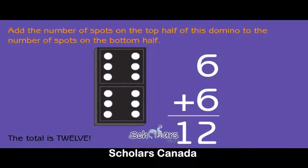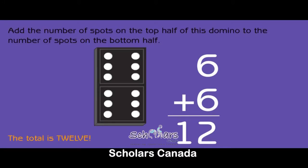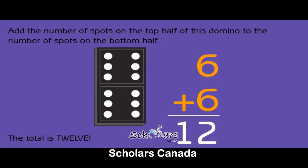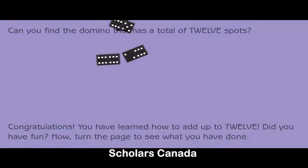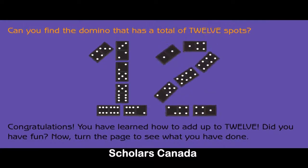Add the number of spots on the top half of this domino to the number of spots on the bottom half. The total is twelve. Six plus six equals twelve. Can you find the domino that has a total of twelve spots?